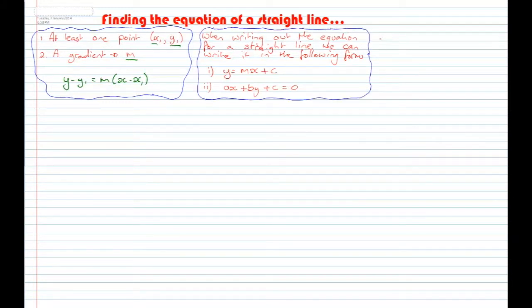A couple of other helpful things to remember, especially when talking about gradient, is that M is equal to rise over run, which is equal to (Y2 - Y1) / (X2 - X1), which is equal to tan θ.